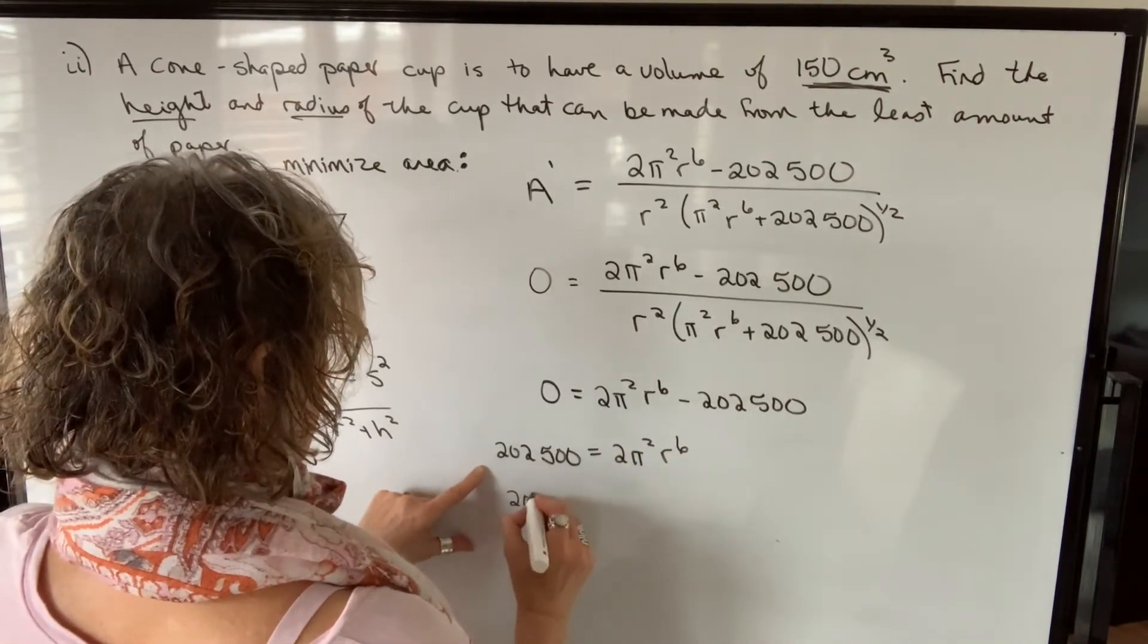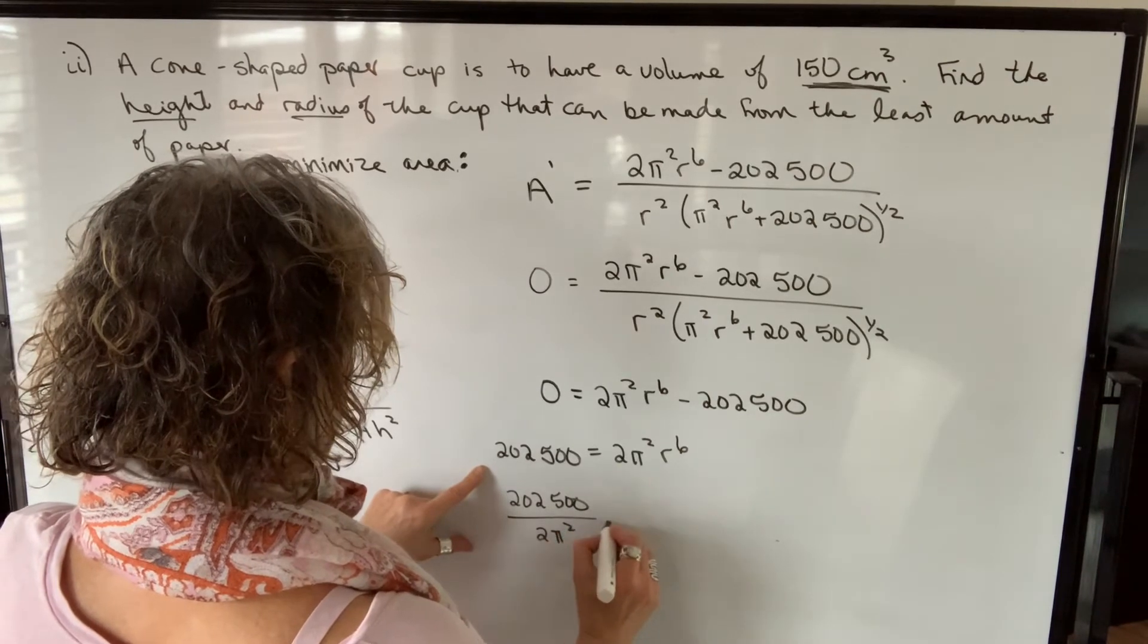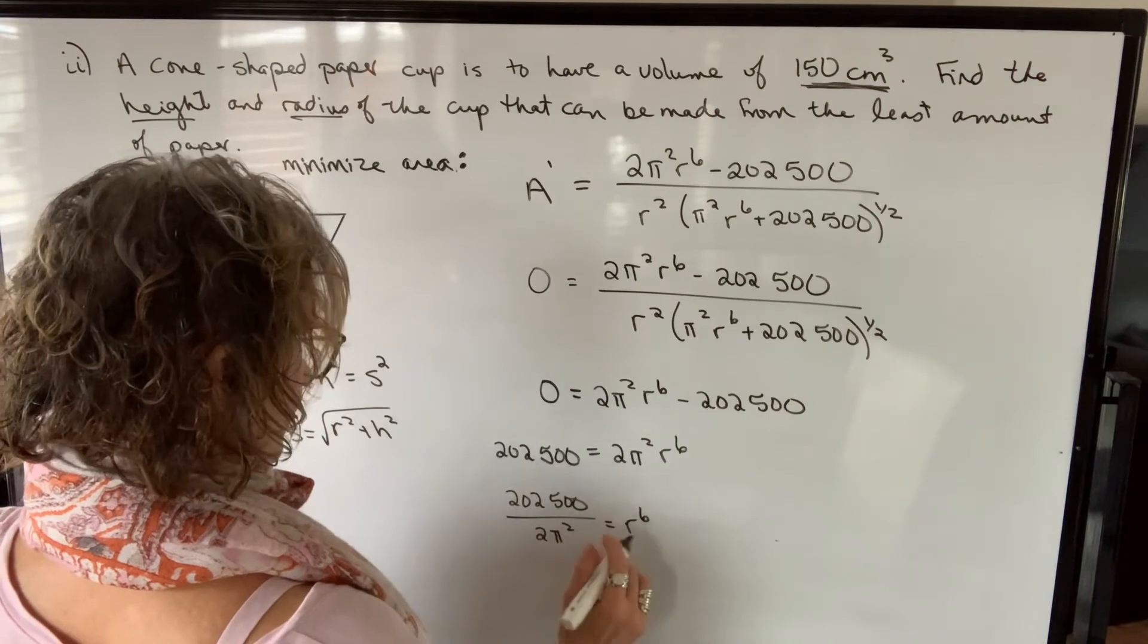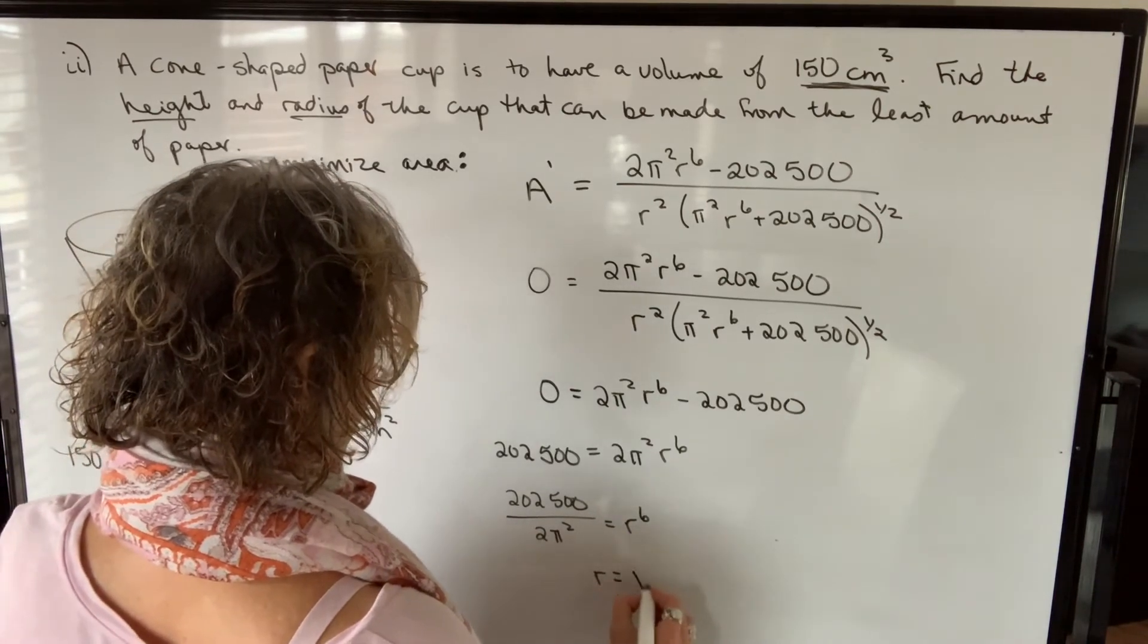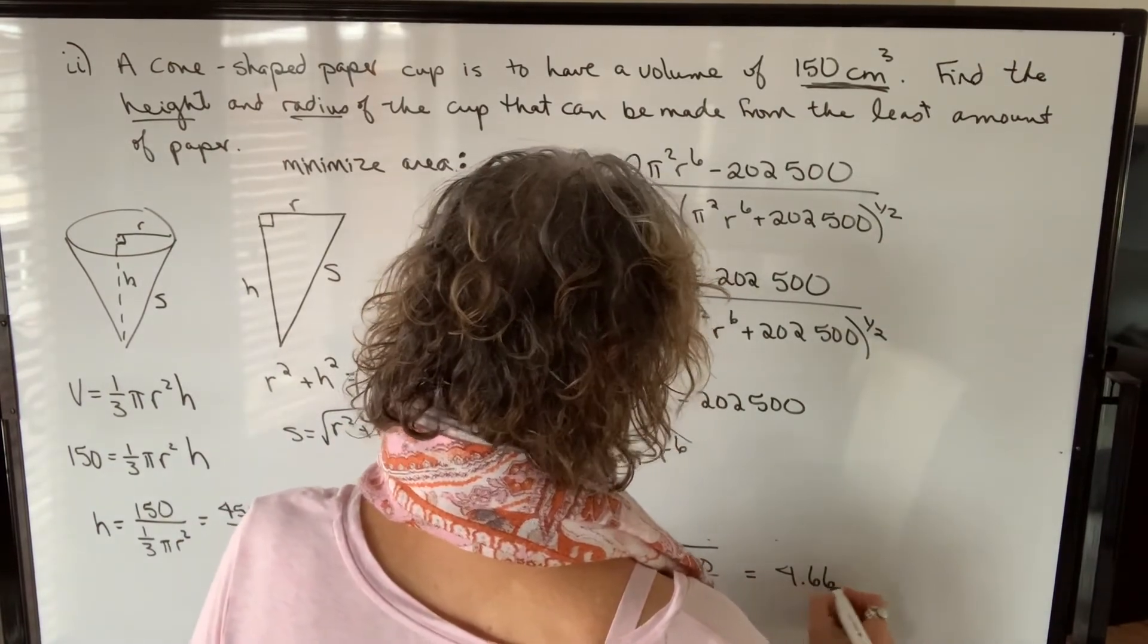To solve it, we're going to just add 202,500 to both sides. We're going to divide by 2 pi squared. Then I'm going to take the sixth root. So r will equal the sixth root of this, 4.66.